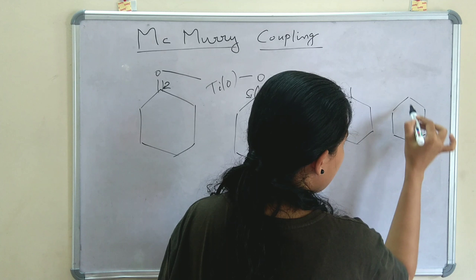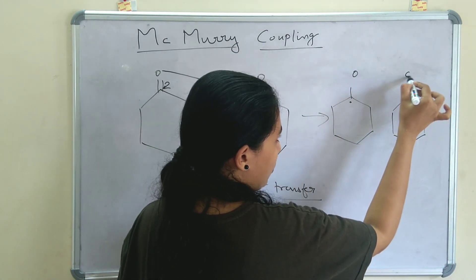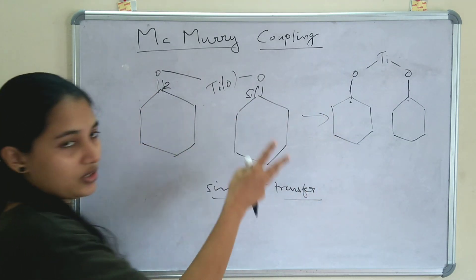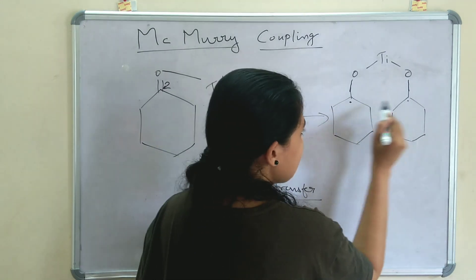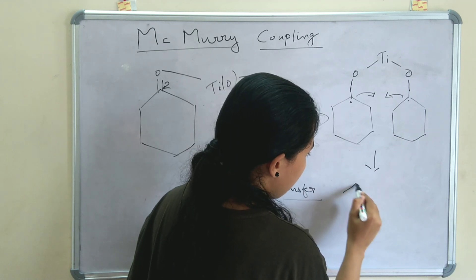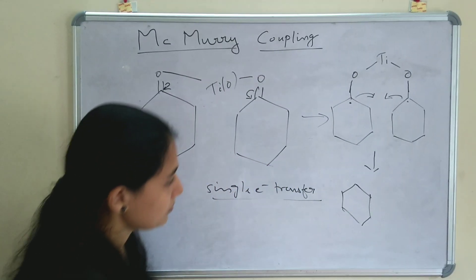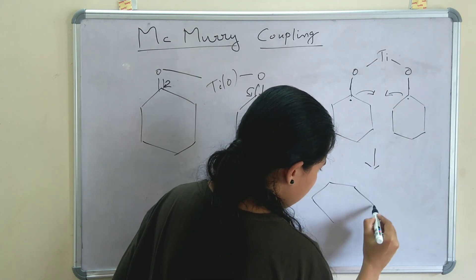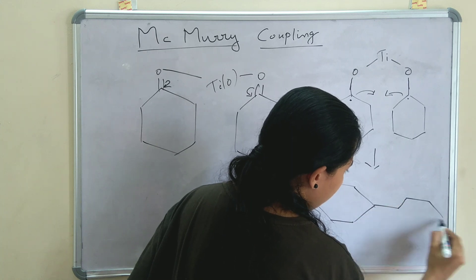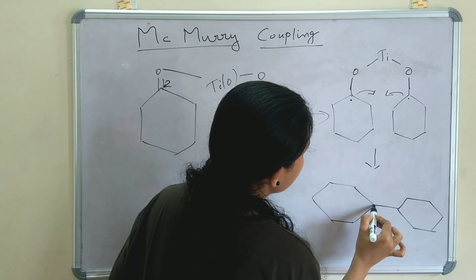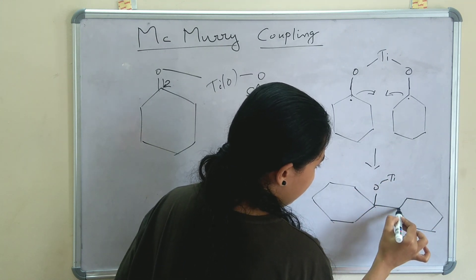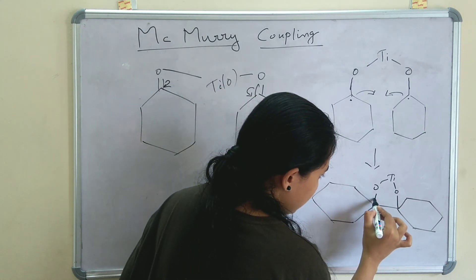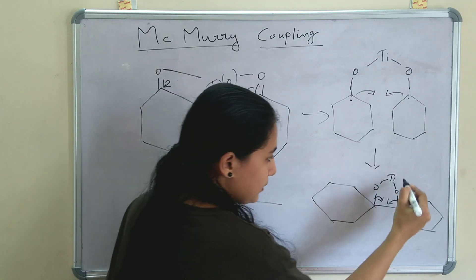So we can write this as a radical or an electron, and here also an anion form is generated. The oxygen is attached to titanium — O-Ti — and the oxygen of both ketones are attached to titanium. Now what happens? These electrons can make a bond, so the two radical carbon centers are coupled together, forming a new C-C bond. This is the intermediate structure we get, with O-Ti on both sides.